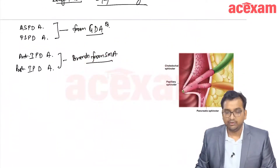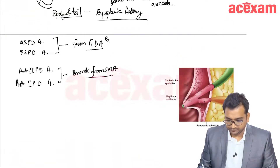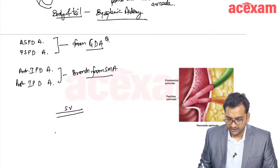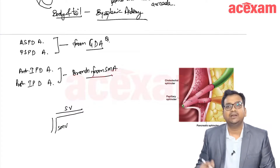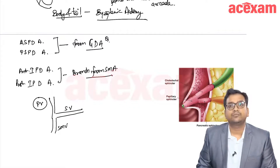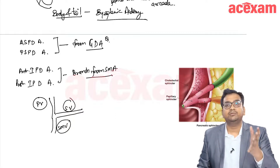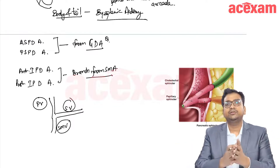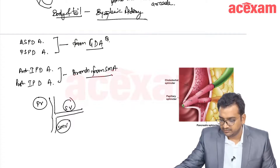Regarding venous drainage: behind the pancreas runs the splenic vein, and below the pancreas along with the uncinate process is the SMV. The splenic vein and SMV join behind the neck of the pancreas to form the portal vein. The majority of the pancreas is drained by the splenic vein, and the uncinate process portion is drained by the SMV.